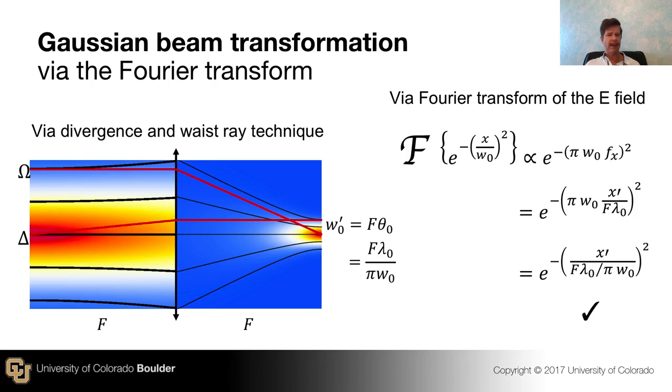We just argued that a lens with one F in front and one F behind is a Fourier transform machine. Let's see if that works for the Gaussian beam, which we've already used in exactly that same geometry.